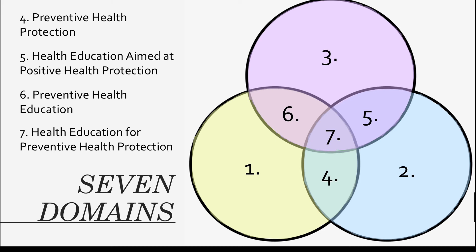Lastly, the seventh domain is a combination of all three: prevention, health education, and health protection. It is known as health education for preventive health protection. A common example of this would be lobbying for seatbelt legislation. In this domain, you're not only educating the youth about the risks of not wearing your seatbelt, but you're also setting in place a policy to prevent any injuries.